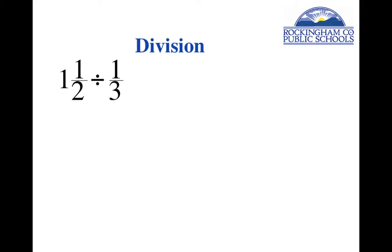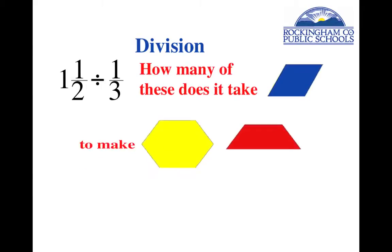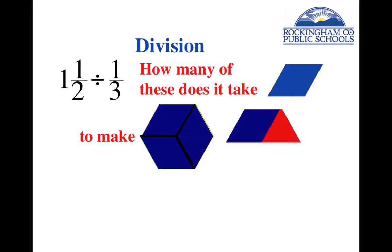One half divided by one third. We're going to read this as the question: How many one thirds does it take to make that? Well, it's going to take three of them to make the yellow hexagon. It's going to take a fourth one to make up part of the red trapezoid. And then we're still going to need part of another one. So it's going to take more than four of them. There's the four and we need half of the next one. So the answer must be four and a half.